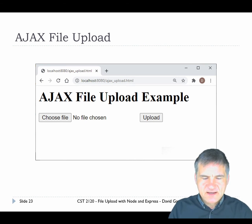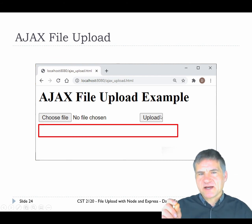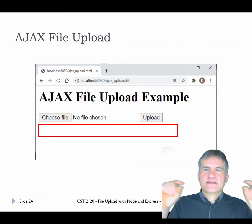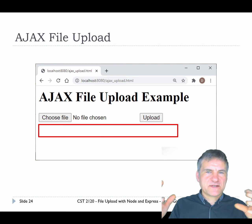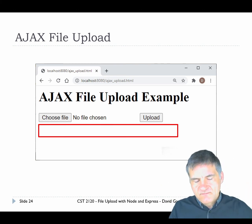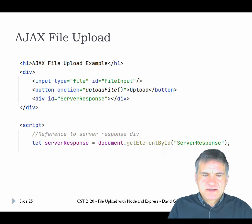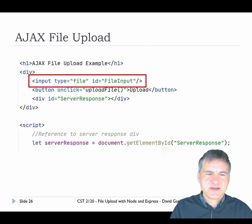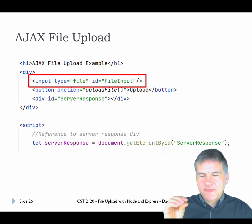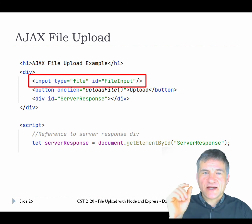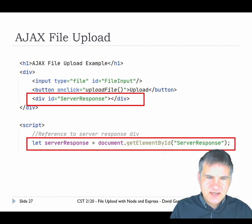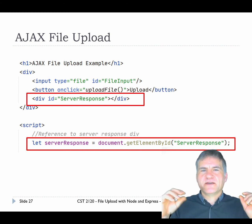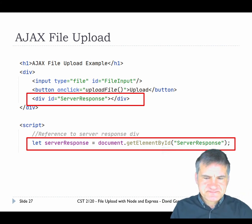Here's the Ajax file upload example. The HTML is even simpler — you've got the input field, and instead of a form submit button, there's just a regular button. We don't need a form element here; if you add a form element you have to prevent default submission which gets complicated. We just use the input field. We don't need a name attribute here because we'll provide that in the JavaScript later, but we do need an ID so we can reference it. There's a button that calls the upload function, and a div at the bottom to provide feedback to the user.